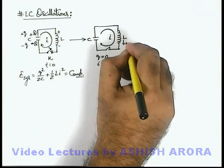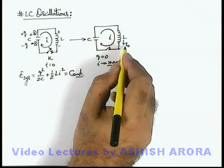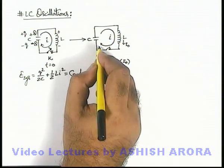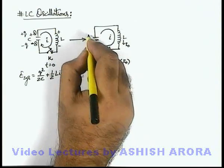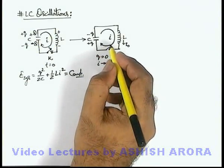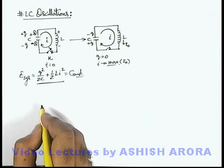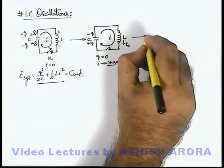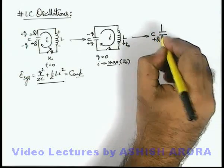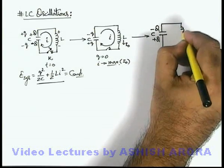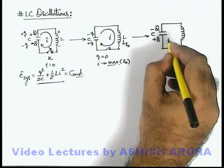Now, with current I₀ flowing and the charge on the capacitor at zero, the inductor tends to continue the current to maintain its flux and stored energy. The circuit continues carrying current in the same direction, so charges flow onto the capacitor plates — one plate receiving positive charge and the other negative. As charge reappears on the capacitor, the current must decrease by energy conservation. Eventually, when the current drops to zero, the capacitor is fully recharged with the lower plate positive (charge Q) and the upper plate negative, restoring all energy as electrostatic energy.